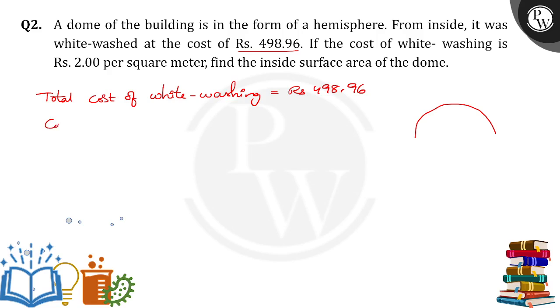Then cost of whitewash for 1 meter square. Cost of whitewashing for 1 meter square is equal to how much? 2 rupees.